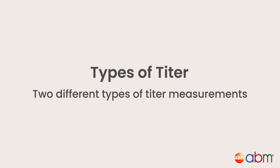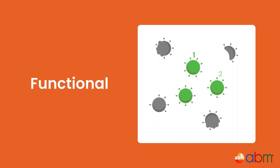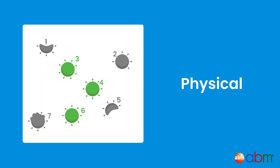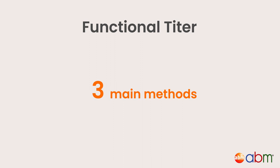Types of Titer. There are two different types of titer measurements: functional and physical titer. Functional titer measures how many viral particles are actually able to infect cells, whereas physical titer simply measures how many total viral particles there are, both functional and non-functional.